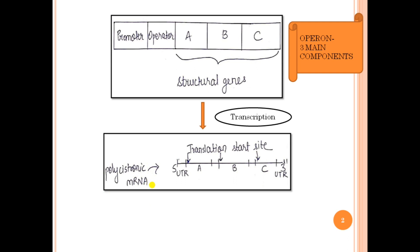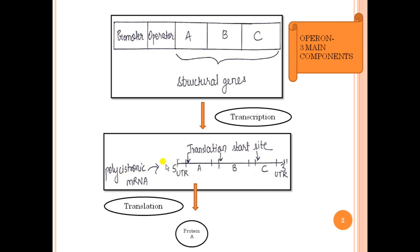Polycistronic mRNA is a characteristic feature of prokaryotes, as compared to eukaryotes which have monocistronic mRNA. A monocistronic mRNA is the one which has only one protein coding region, which on translation will yield only one protein. So this polycistronic mRNA on translation will give protein A, protein B, and protein C.